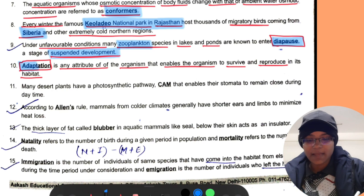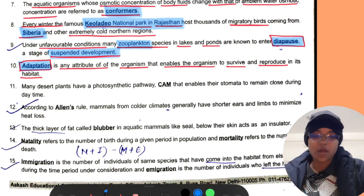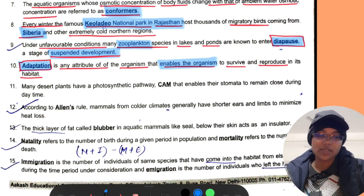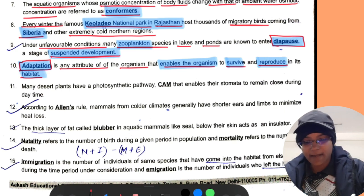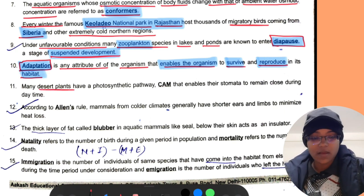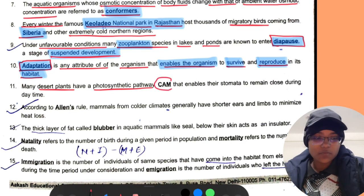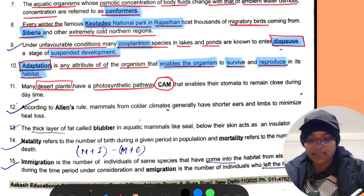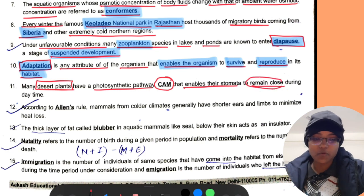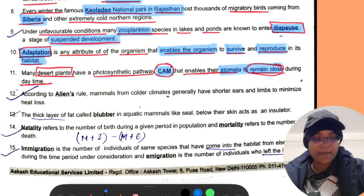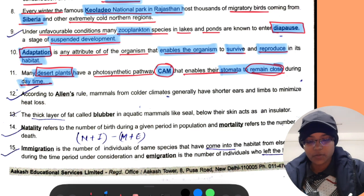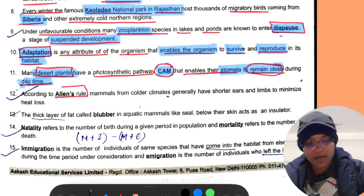Adaptation is any attribute of the organism that enables the organism to survive and reproduce in its habitat. Many desert plants have a photosynthetic pathway called CAM pathway that enables their stomata to remain closed during daytime.